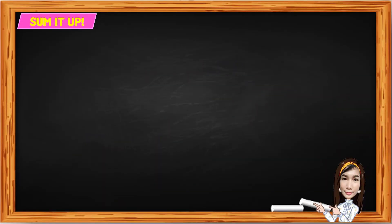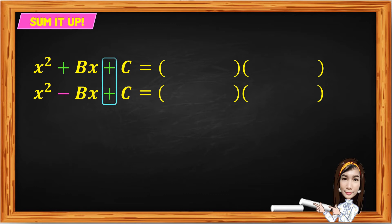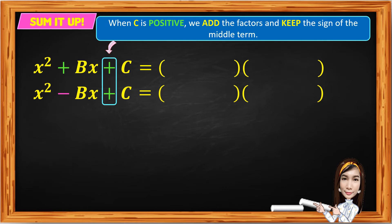To sum it up: given x squared plus bx plus c and x squared minus bx plus c, the binomial factors are written inside the two pairs of parentheses. When c is positive, we add the factors and keep the sign of the middle term. In x squared plus bx plus c, the middle term is positive, so the factors are both positive and the operations of the binomial factors are both plus.